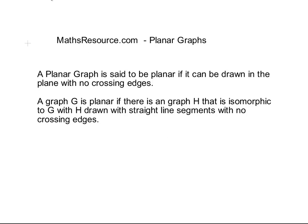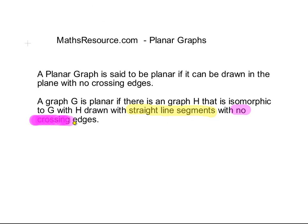In this presentation we are going to look at planar graphs. A planar graph is a type of graph. Essentially, a planar graph is said to be planar if it is drawn in the plane with no crossing edges. A graph G is planar if there is a graph H that is isomorphic to G, with H drawn with straight line segments. But the most important part is no crossing edges.